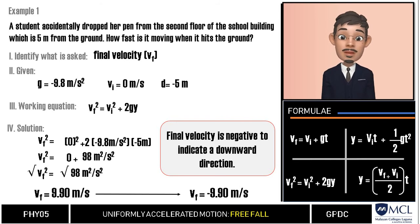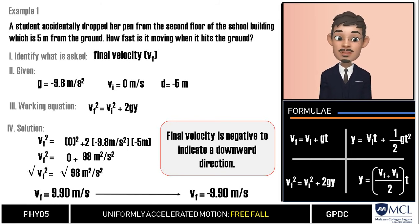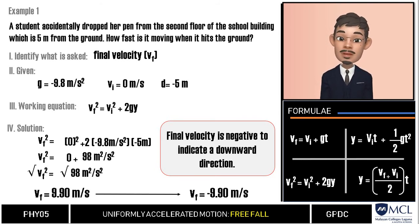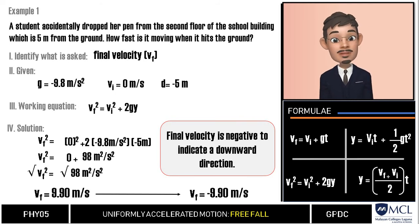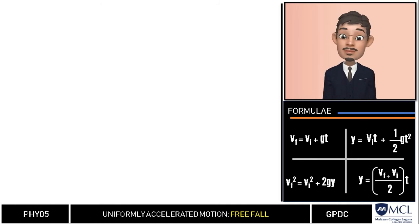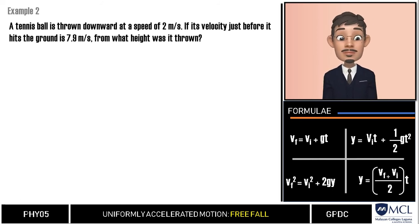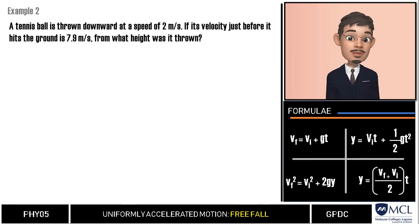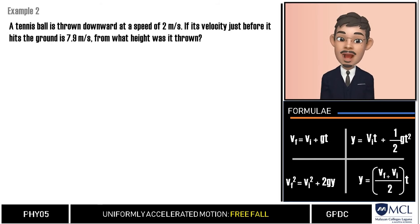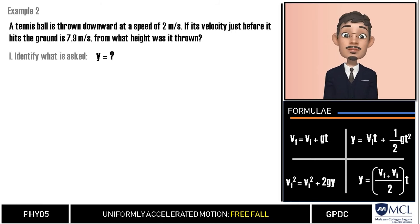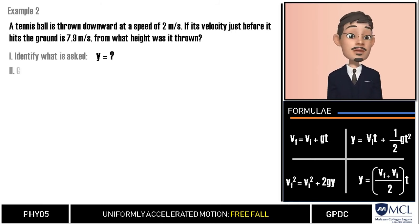Remember these conventions because velocity, along with acceleration and displacement, are all vector quantities in free-fall problems, and therefore require us to identify direction. In example number two, a tennis ball is thrown downward at a speed of 2 meters per second. If its velocity just before it hits the ground is 7.9 meters per second, from what height was it thrown?